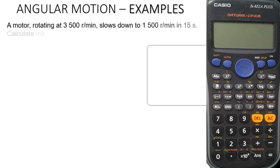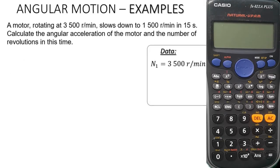Without wasting any time, let's dive in. A motor rotating at 3500 revs per minute slows down to 1500 revs per minute in 15 seconds. Calculate the angular acceleration of the motor and the number of revolutions in this time.